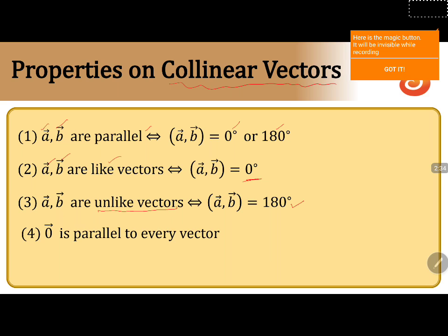Coming to the last property: the zero vector, whose magnitude is 0, is also known as the null vector. The null vector or zero vector is parallel to every vector. Even the zero vector is parallel to the zero vector itself. That is why we say the zero vector is parallel to every vector.